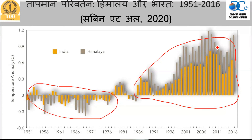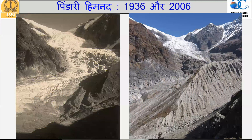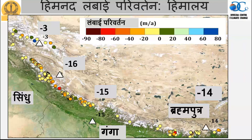This clearly suggests that whether in a cooling phase or warming phase, there is a significantly higher amplitude of temperature change in the Himalayas. When we talk about a two-degree rise in global temperature, it probably means a three-degree rise in the Himalayas. We know that the Pindari glacier has significantly lost its area.